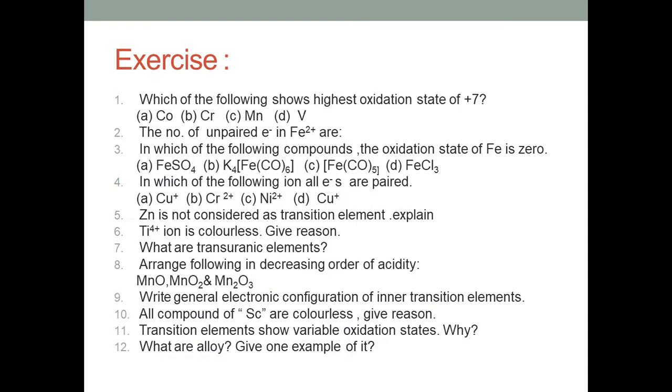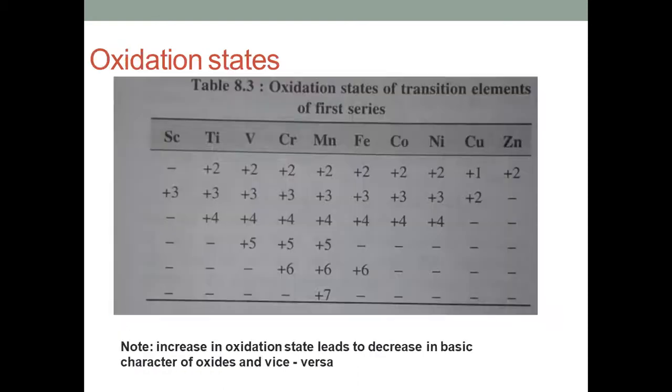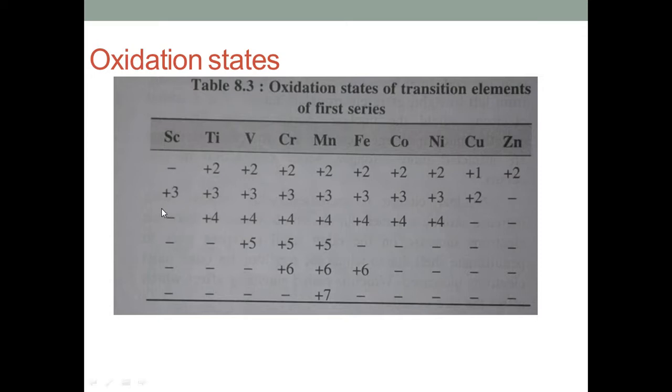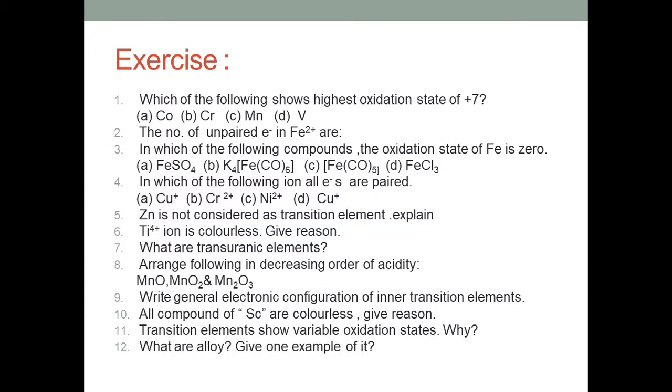Question number ten: all the compounds of scandium are colorless, what is the reason? Because scandium does not possess any unpaired electron in its oxidation states. Scandium shows only plus three oxidation state. At that time it does not have any unpaired electron, and because of that its ions are colorless. Question eleven: transition elements show variable oxidation states, why? Because they have a number of unpaired electrons, they show variable oxidation states.